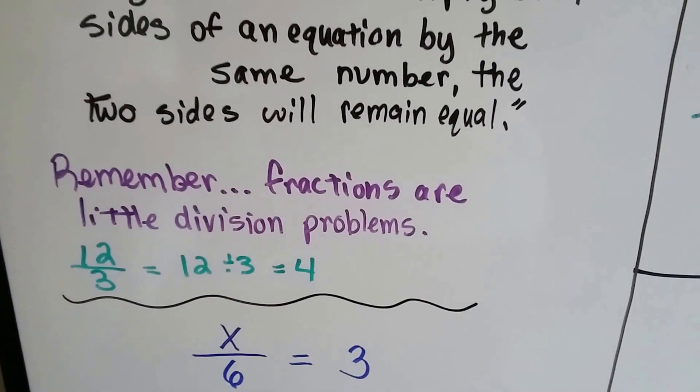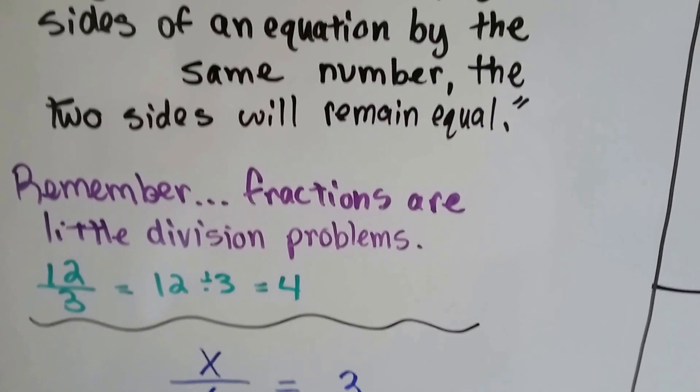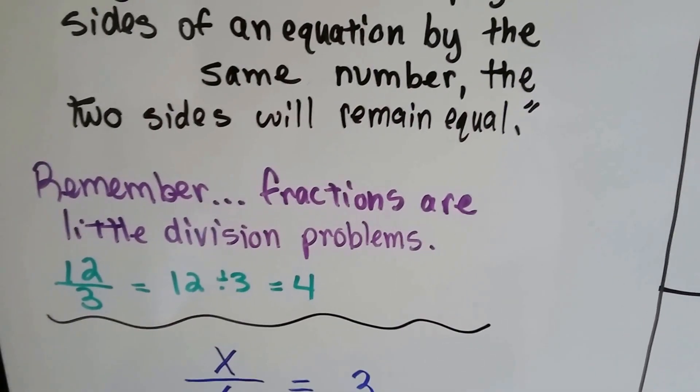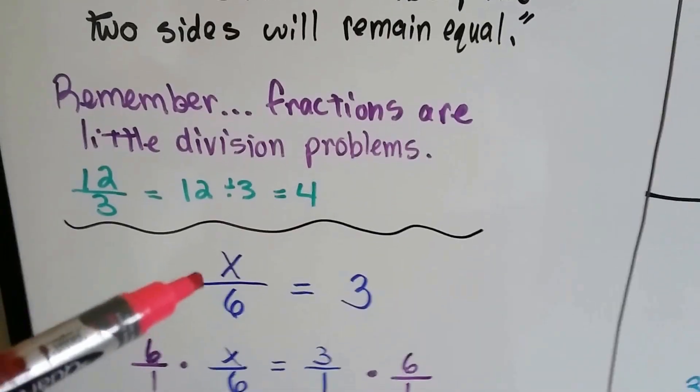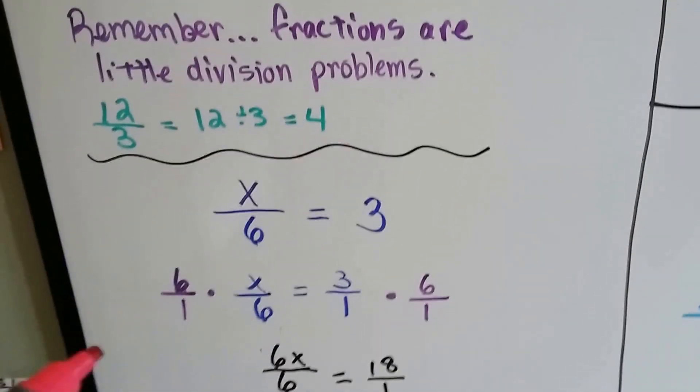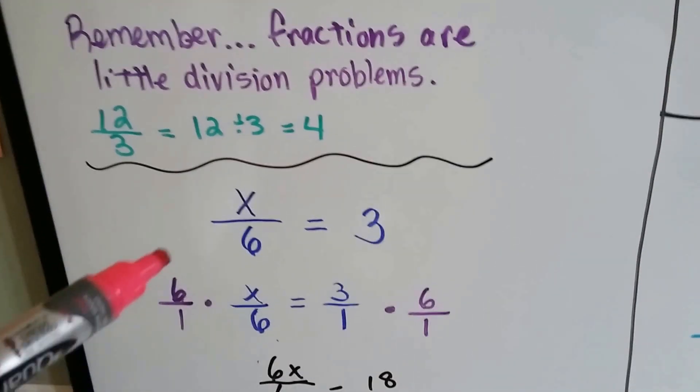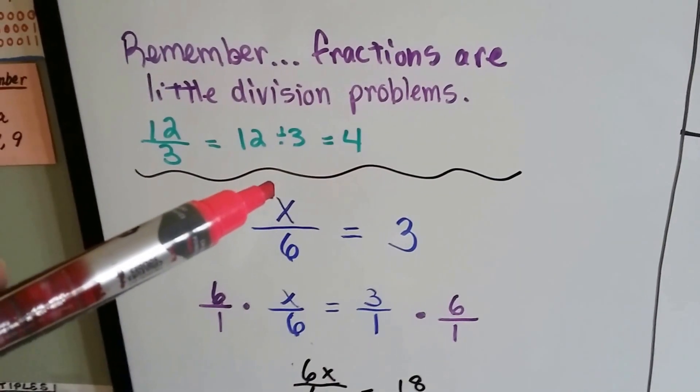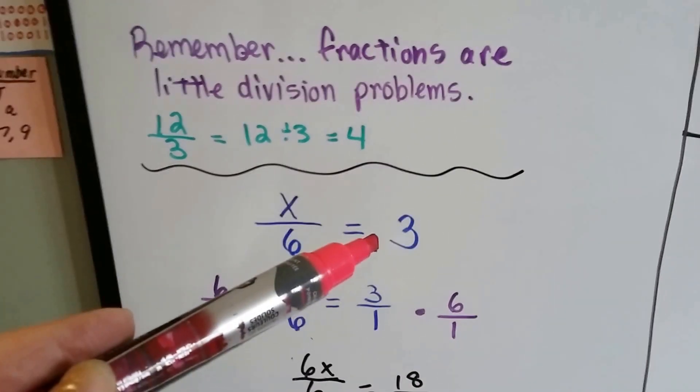Remember, fractions are little division problems. If we have 12 over 3, it really means 12 divided by 3, and it equals 4. So if we have x over 6 equals 3, it means we need to find the big number that when divided by 6 is equal to 3.